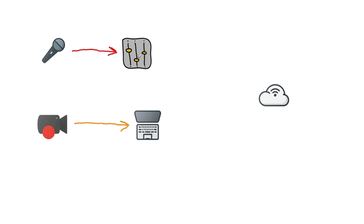Usually what we do is take our interface or mixer — if it's an X32 or digital mixer, it's really easy — and plug it into the streaming laptop. Whatever software you're using, whether that's OBS or Livecast or whatever, you'll get your mix coming out, you could even do an aux send or whatever. So you combine video and audio together, and then stream out to your website, YouTube, or Facebook. This is really the basic setup — it's not that complicated.